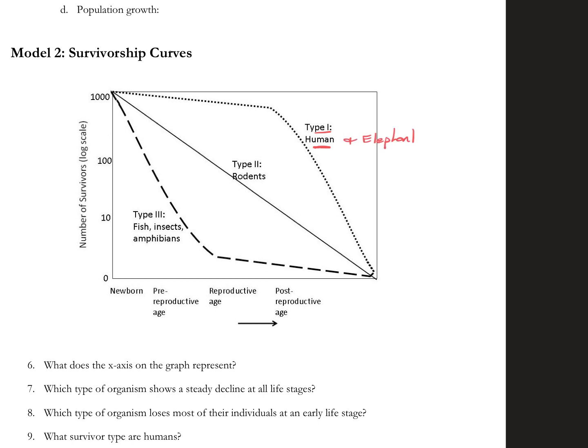There's a lot of mammals that follow this type of survivorship curve. The idea is that, especially with humans and elephants, what you do is you produce only a few offspring at a time.